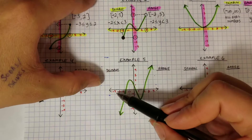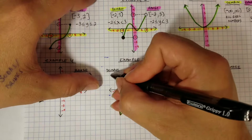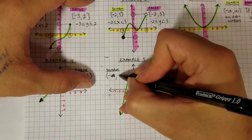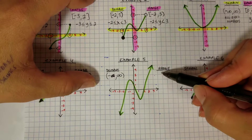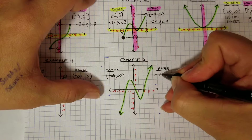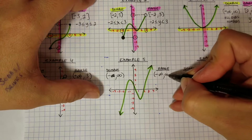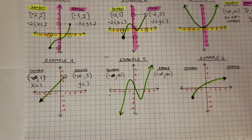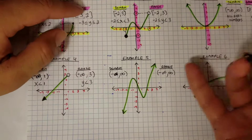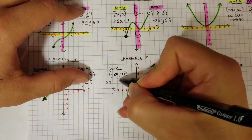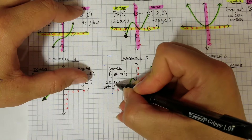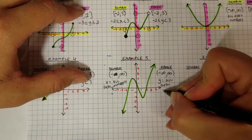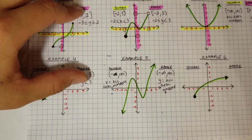Example 5 — domain and range. The left side goes forever to the left: negative infinity. The right side goes forever to the right: positive infinity. The bottom goes down forever: negative infinity. The top goes up forever: positive infinity. So both domain and range are (-∞, ∞), which means all real numbers. As an inequality: x = all real numbers, y = all real numbers.